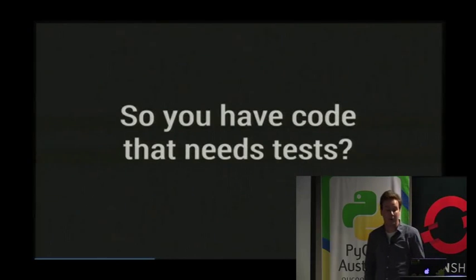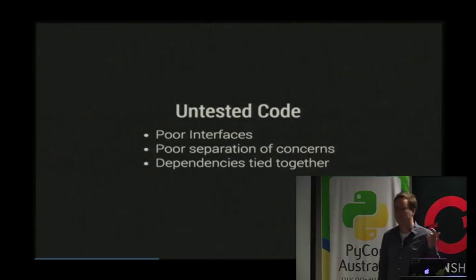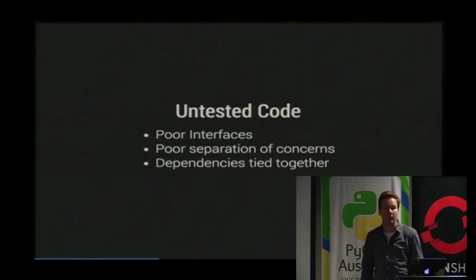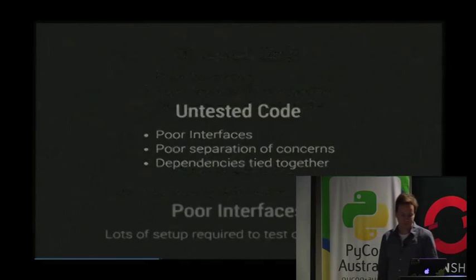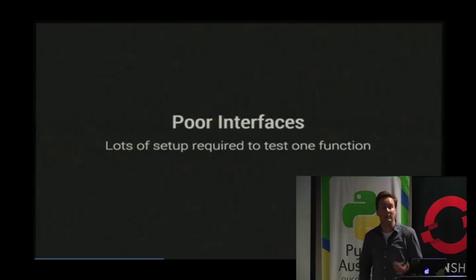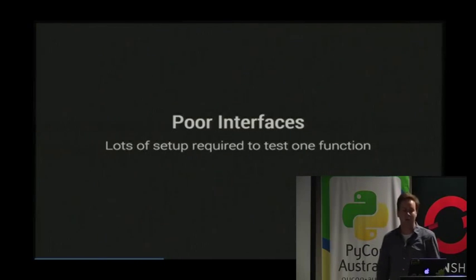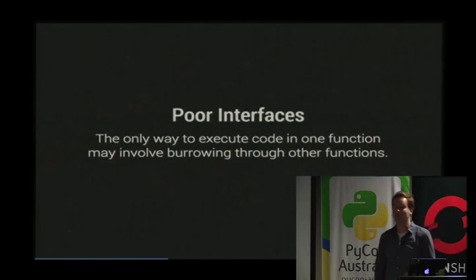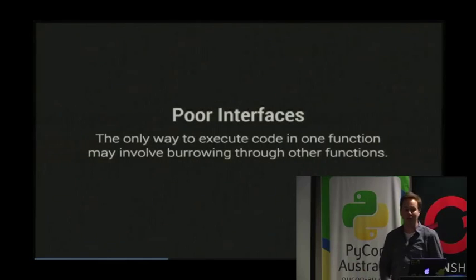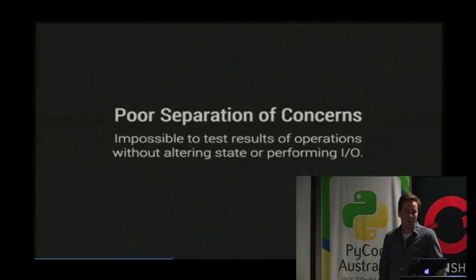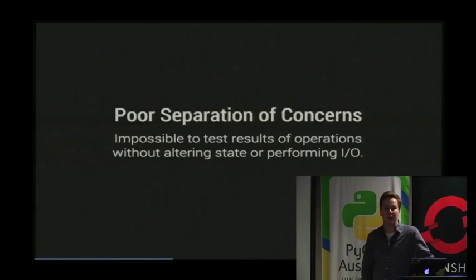Adopting a test-driven development approach isn't immediately possible if you have untested code. You probably have poor interfaces — various bits of your code base interact with other bits with dependencies tied together, making it hard to test in isolation. Poor interfaces mean you have to do lots of setup to get into a single function to actually test it, and the business logic you want to test might be four or five layers of function calls deep.